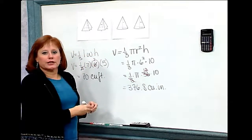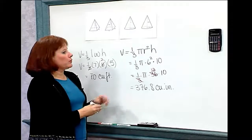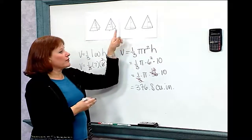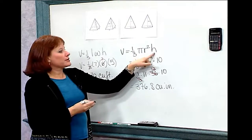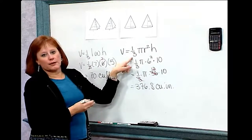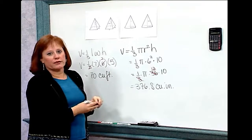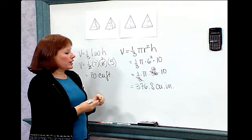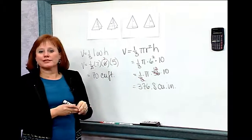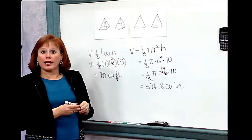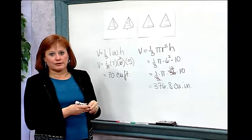Exactly as we did in the previous pyramid, we found the area of the base by taking pi r squared, times the height, times one-third to find the volume of the cone, and our cone gave us a volume of 376.8 cubic inches.